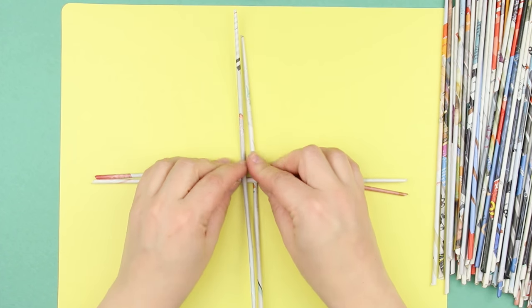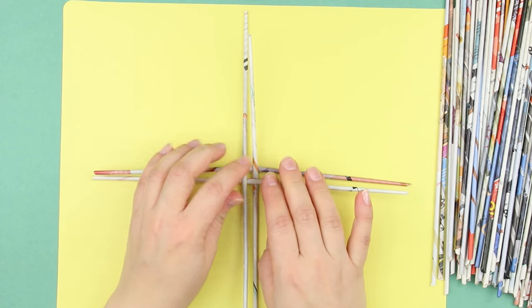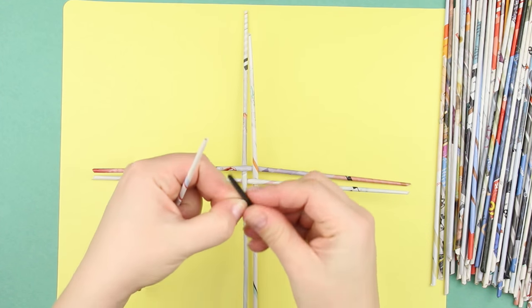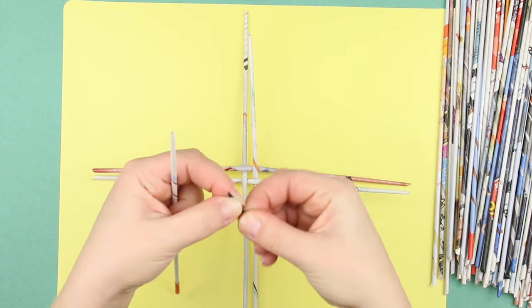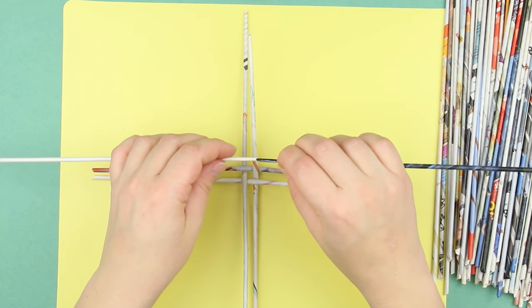Weave four tubes to shape a square in the center. It will be a frame. Make an extended weaving tube. Fold the end of a tube in half. Add some glue. Put it into another tube.